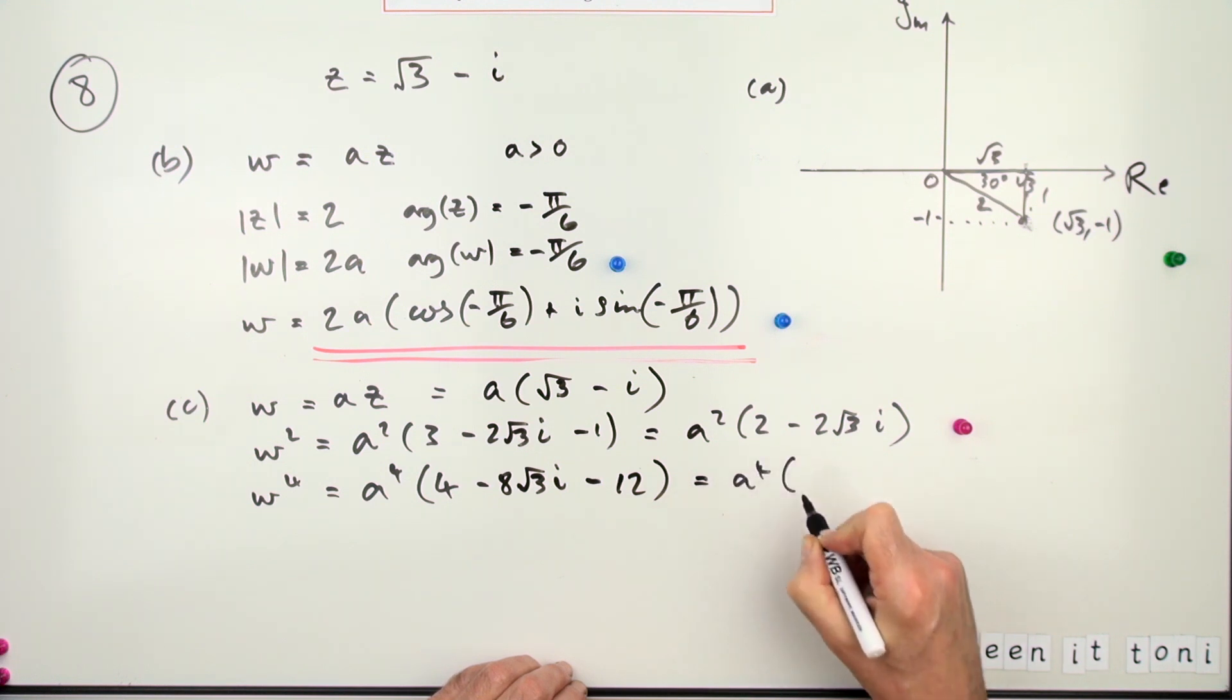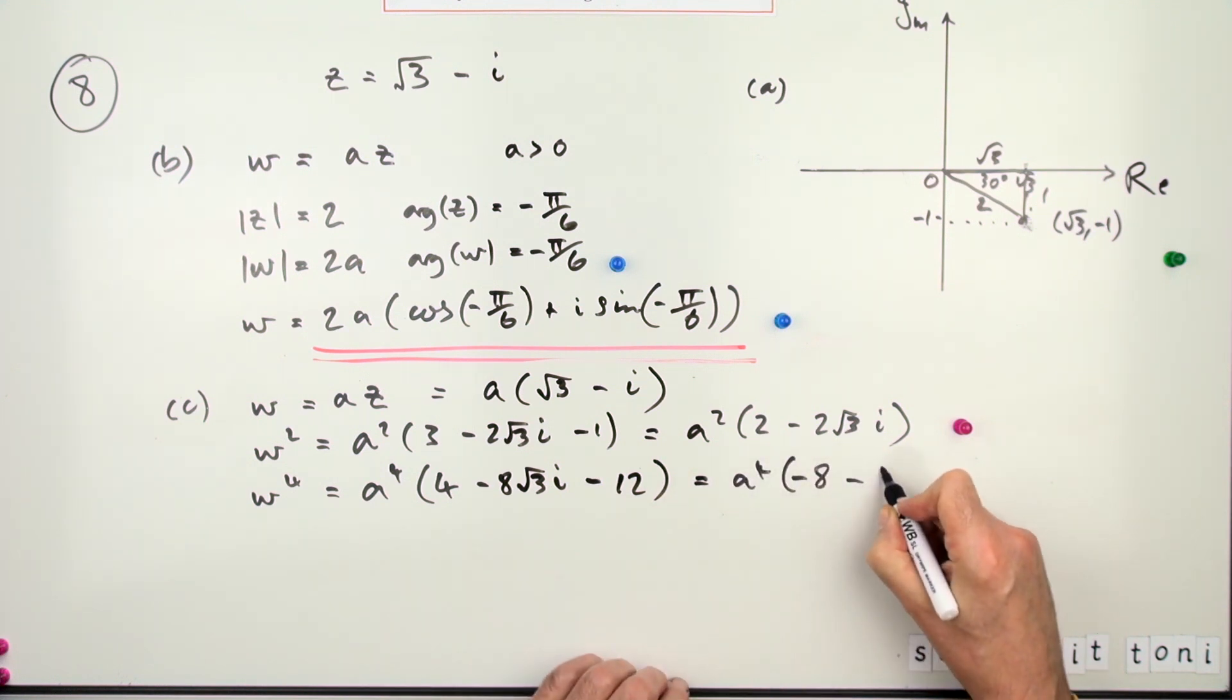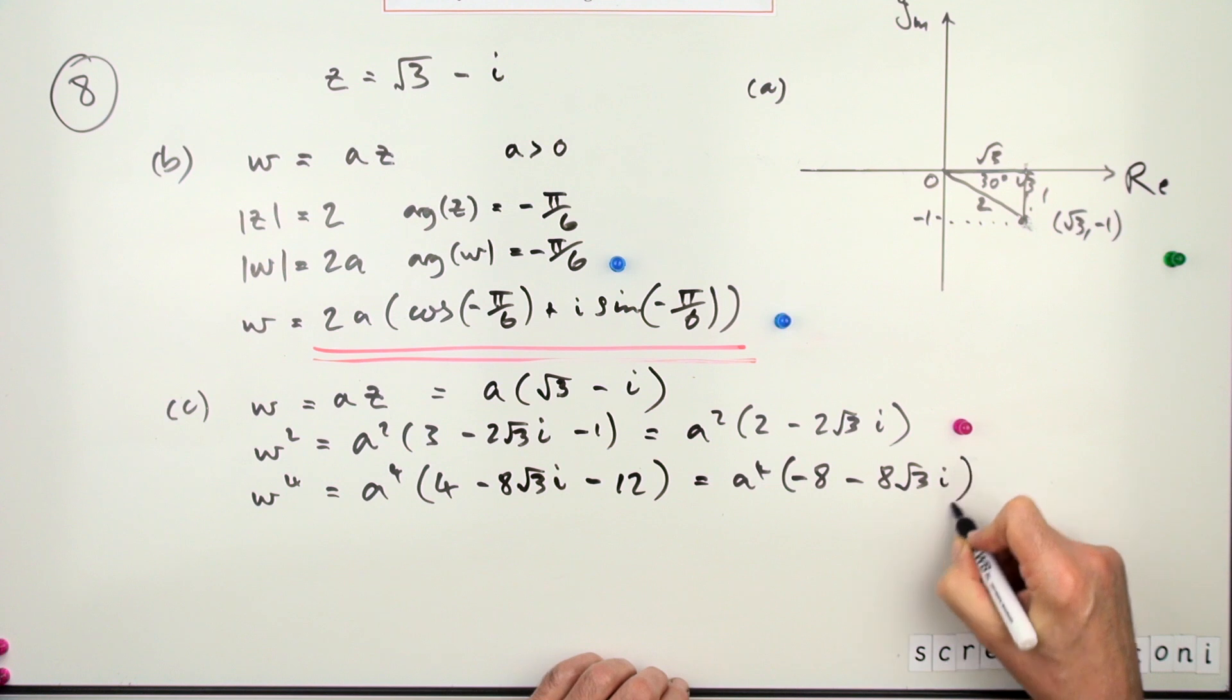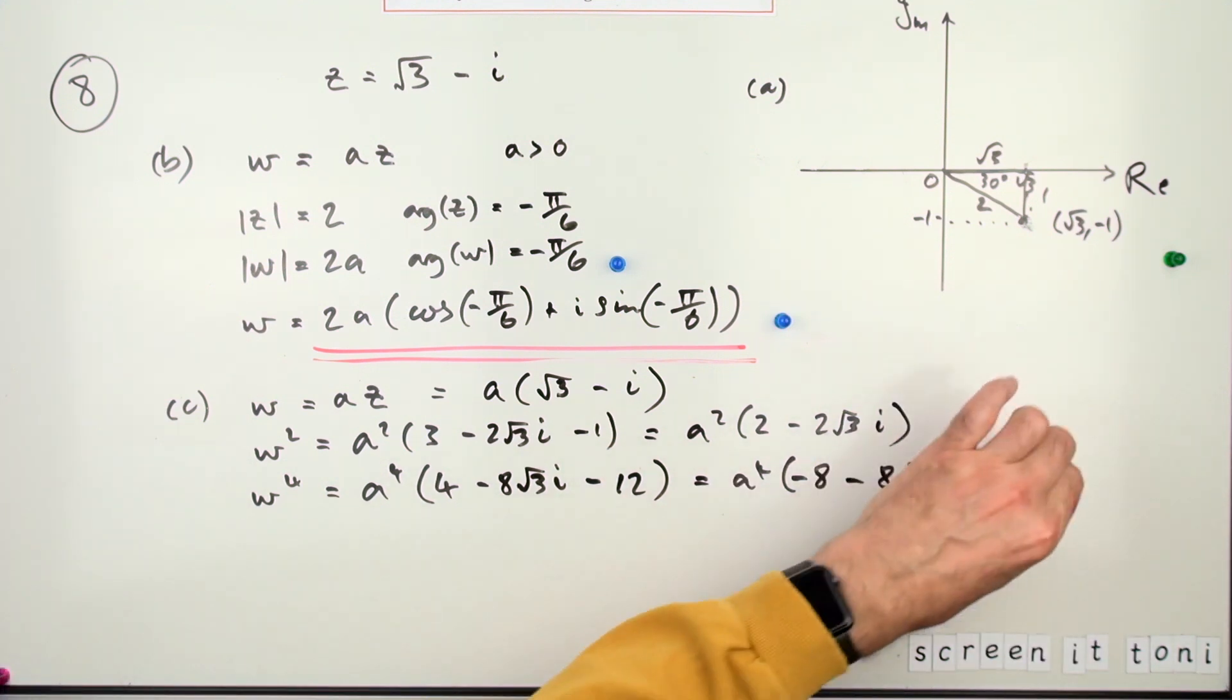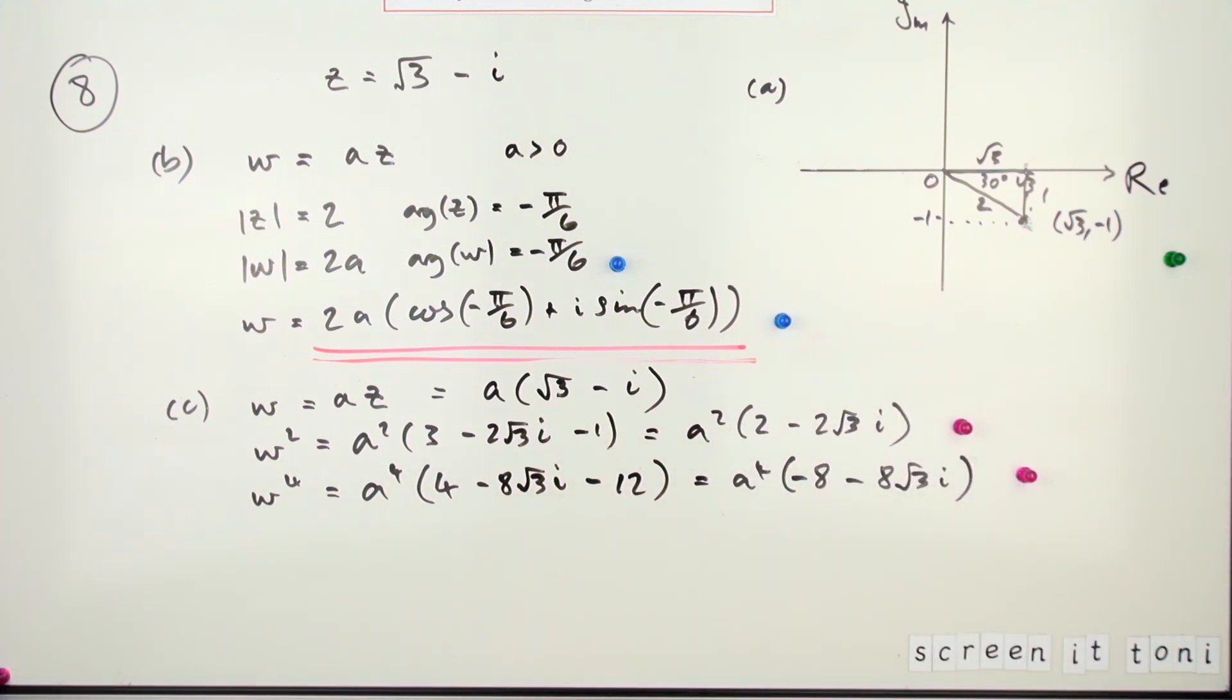That would be a mark. You're getting closer. And then finally for power 8, just square it again. But I think before I square it again, because of these numbers, I'll just take that 8 out and make it 8—so 8·a^4·(−1 − √3·i). So finally, w to the power 8 would be... squaring this would be 64, and I should have written w to the power 8 there, of course—a to the 8...